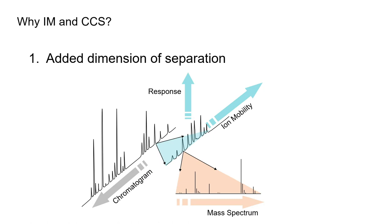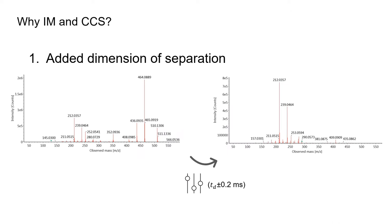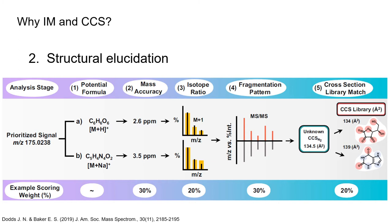Ion mobility is utilized by researchers for two main purposes. First, as another dimension of separation complementary to mass spectrometry — and note that complementary does not mean orthogonal; there is a reason for this which we will see in another video. Thus, we can use ion mobility for increasing peak capacity. Mass spectra can be filtered by ion mobility so that only ions — product ions, for example — with the same drift time as a selected mass-to-charge precursor ion are displayed, eliminating the majority of interfering ions.